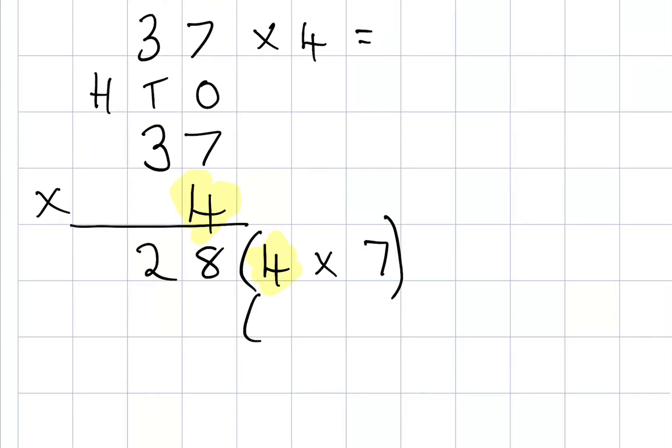Now I need to do my tens column. And again I bring down that 4. I now want to find out 4 lots of 30. We know that 3 is worth 30 because it's in the tens column. To make this a bit easier for me I could do 4 times 3. Now 4 times 3 gives me the answer of 12. But it's actually asking for 4 times 30, so I need to make that 12 ten times bigger.